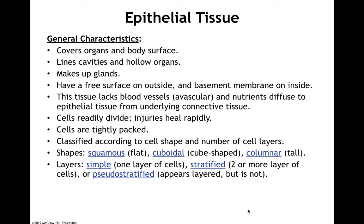They can be a simple layer, which would only be one layer of cells — squamous, cuboidal, or columnar. Or they could be stratified, meaning two or more layers of cells, and only the surface layer would be squamous, cuboidal, or columnar. There's also a third type called pseudostratified, which can appear to be stratified, but in reality it's not — it's only one layer of cells. We'll look more closely at that in a few moments.